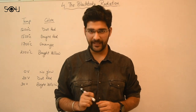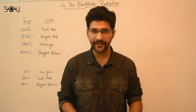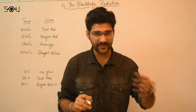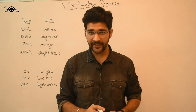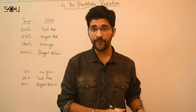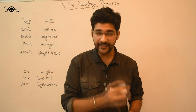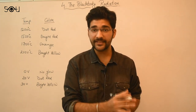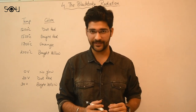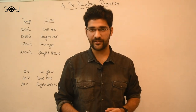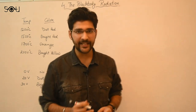Suppose I have a piece of metal and I take it to a dark room. Can you see that metal in the dark room? The answer is no — because no light is falling on it, none of it is being reflected, and hence we cannot see it. But does that mean it is not emitting anything? No. According to Kirchhoff's law, every object at every instant emits electromagnetic radiation. So that object is indeed emitting electromagnetic radiation, but it is not in the visible region — it is in the infrared region.